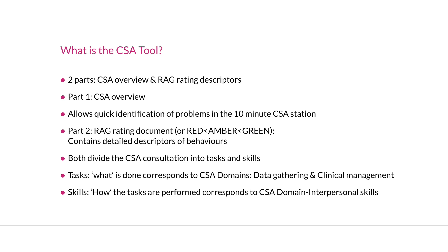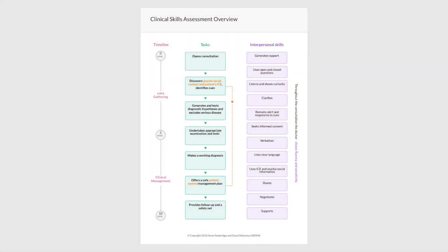The skills — how the tasks are performed — correspond to the CSA domain of interpersonal skills. In the CSA, interpersonal skills correspond to a third of the marks, but in our tool you can see that it runs throughout the consultation. Looking at the CSA overview in more detail, on the left we have green boxes representing tasks, on the right purple lozenges for the interpersonal skills. Time is shown in pink on the far left, and data gathering including clinical examination should be finished by five or six minutes to allow time for clinical management.